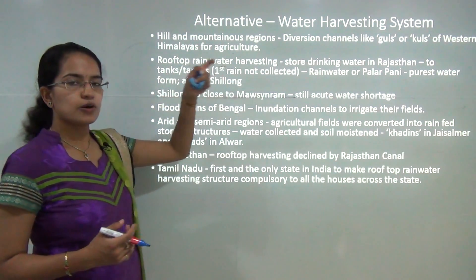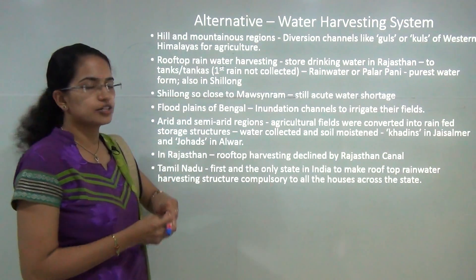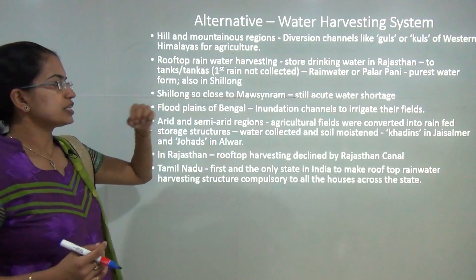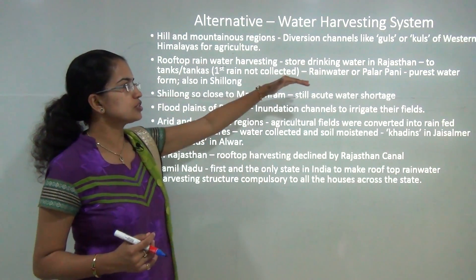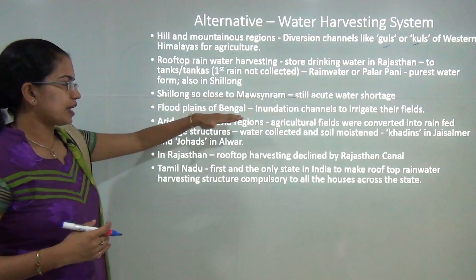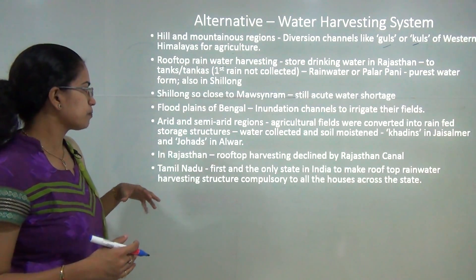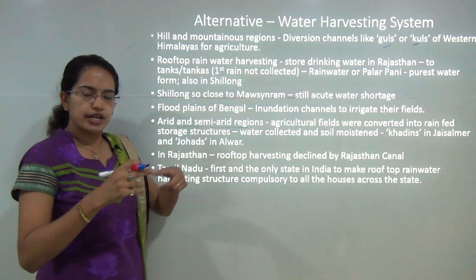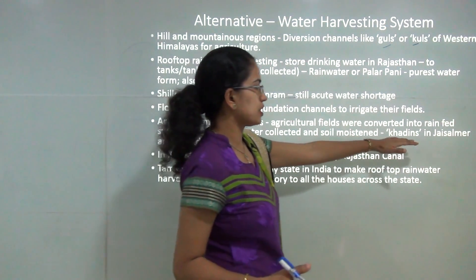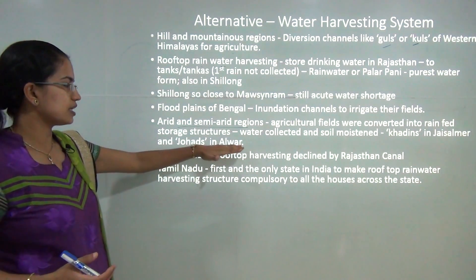This same rooftop mechanism is now being used in Shillong, which faces acute water shortage due to overexploitation of water resources. In mountainous regions, diversion channels known as 'ghouls' or 'kuls' are built to divert extra water. In the flood plains of Bengal, inundation channels are built to irrigate nearby fields. In arid and semi-arid areas, agricultural fields are converted into water harvesting storage structures called 'khadins' in Jaisalmer and 'johads' in Alwar. This has been a major project of Rajendra Singh, who runs an NGO, and numerous johads have been made in that area, providing good agricultural support.